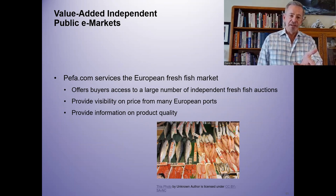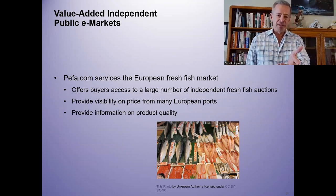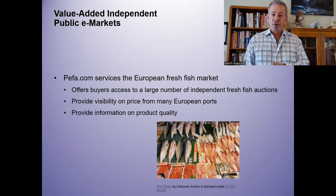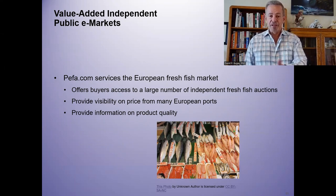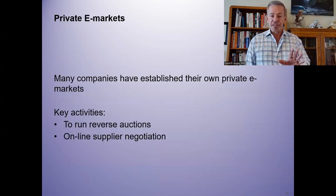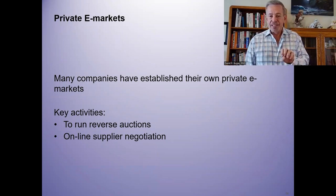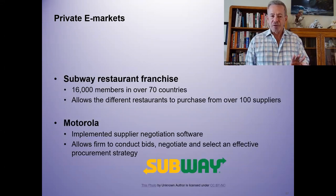Go check out the website Pifa.com — it's a fresh fish market where you can get into the bidding process to get your latest cod or filet of whatever fish you want. It's kind of an interesting aspect of e-markets. You'll see more of these e-markets out there; a lot of them are private for different segments of the market. You'll also see reverse auction processes as well as supplier negotiation going on.